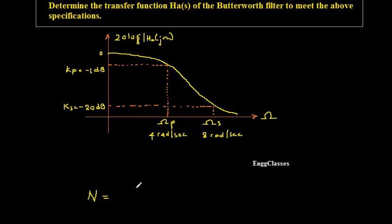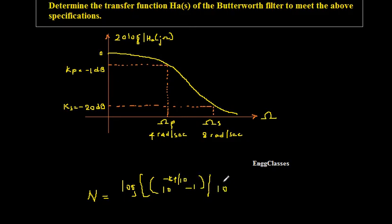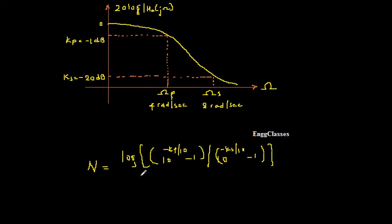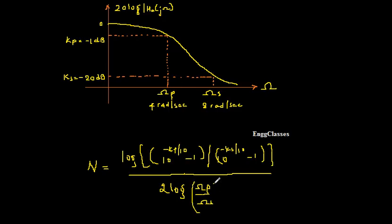For this, we have one straight formula: n is equal to log of (10 to the power of minus Kp divided by 10, minus 1) divided by (10 to the power of minus Ks divided by 10, minus 1), with everything divided by 2 log of omega p divided by omega s. We will make use of this formula and put in all the values to find the filter order.